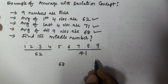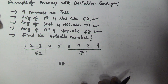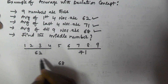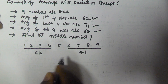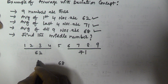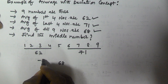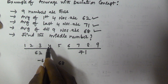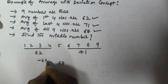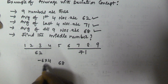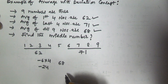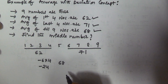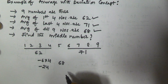The deviation for the first four numbers is 62 minus 68, which equals minus 6. But there are four numbers, so we multiply minus 6 by four, giving us a total deviation of minus 24.